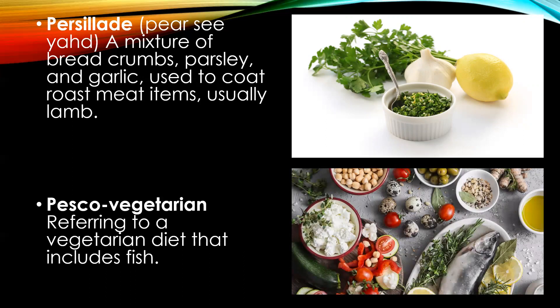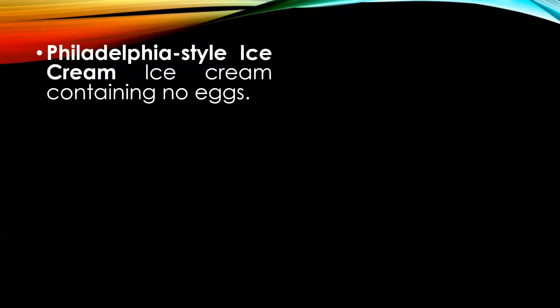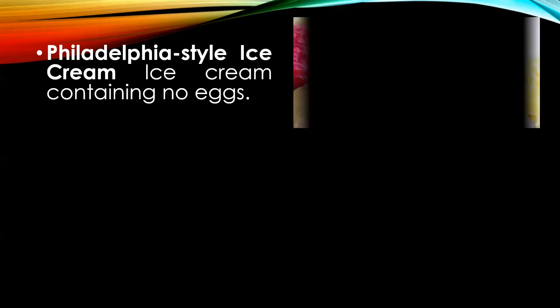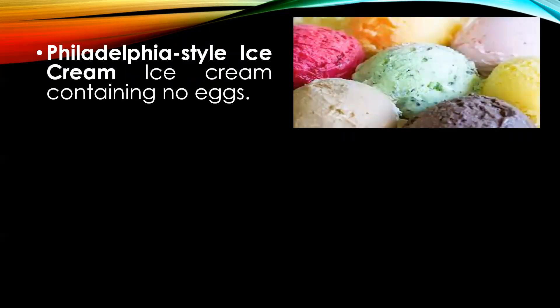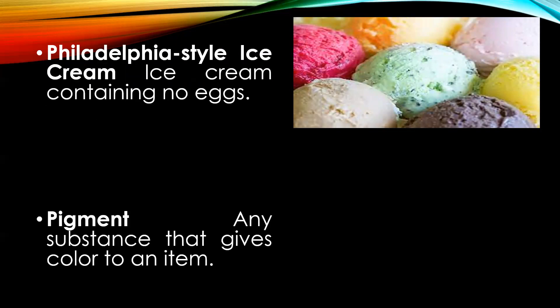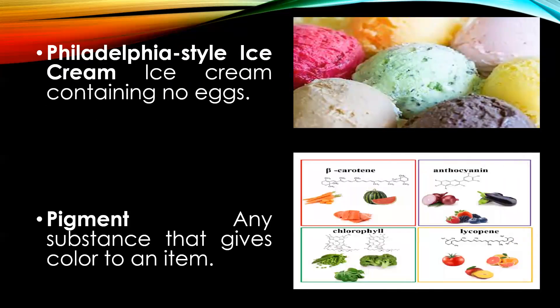Pesco-vegetarian refers to a vegetarian diet that includes fish. Philadelphia style ice cream is a type of ice cream which does not contain eggs. Pigment is the colour pigment present in fruits and vegetables, for example chlorophyll in green leafy vegetables.